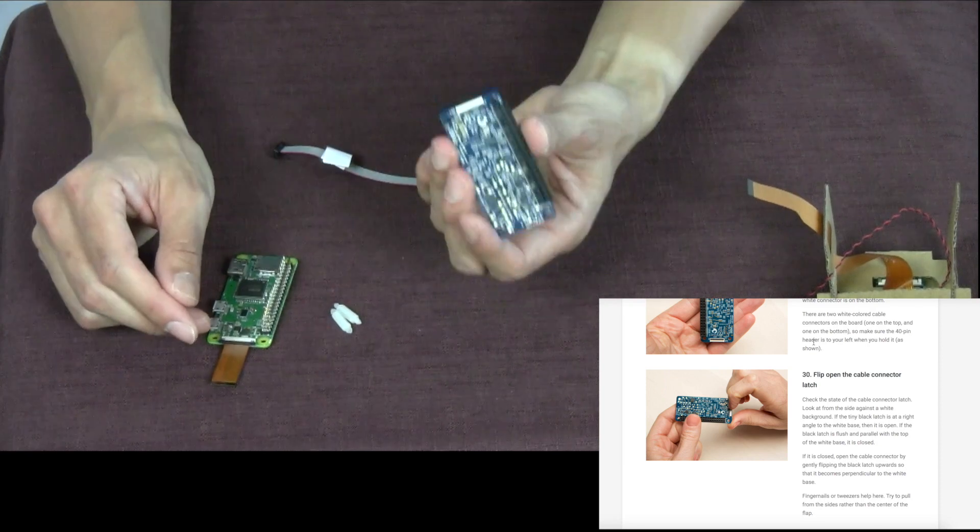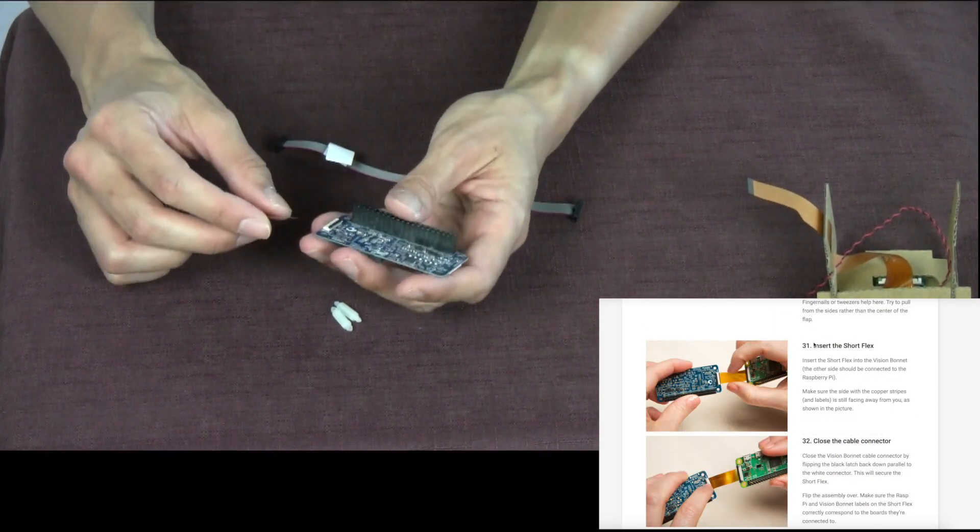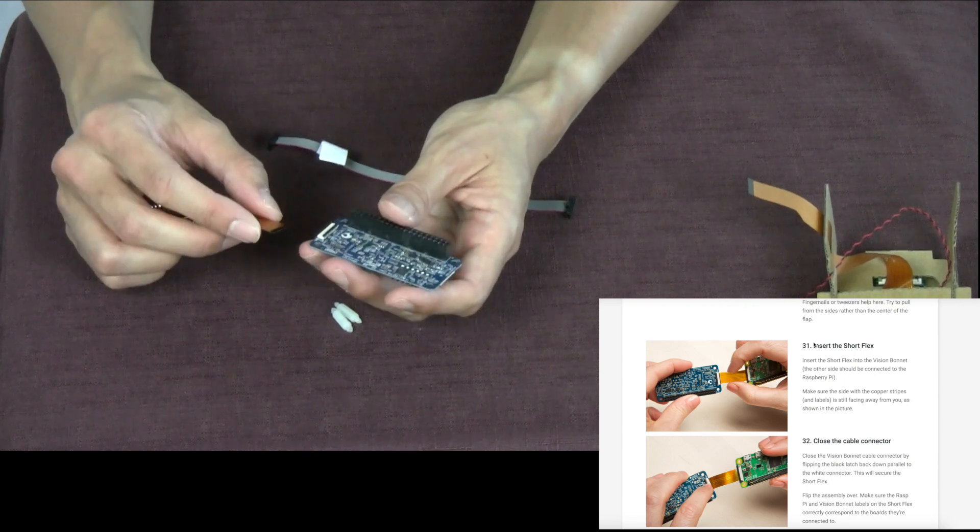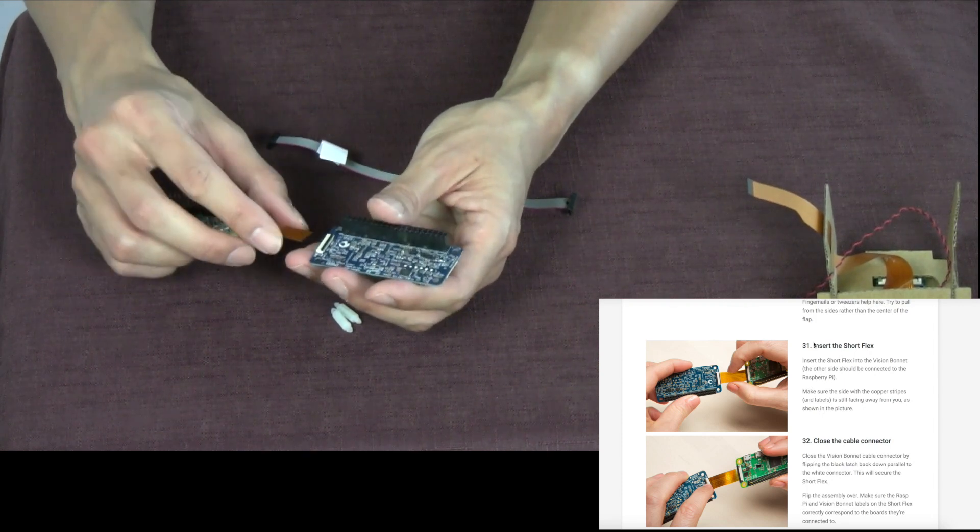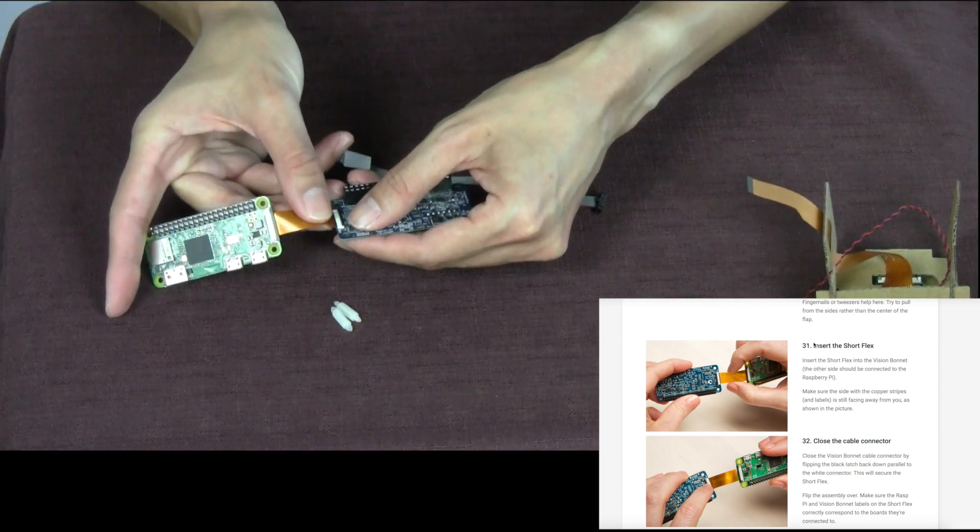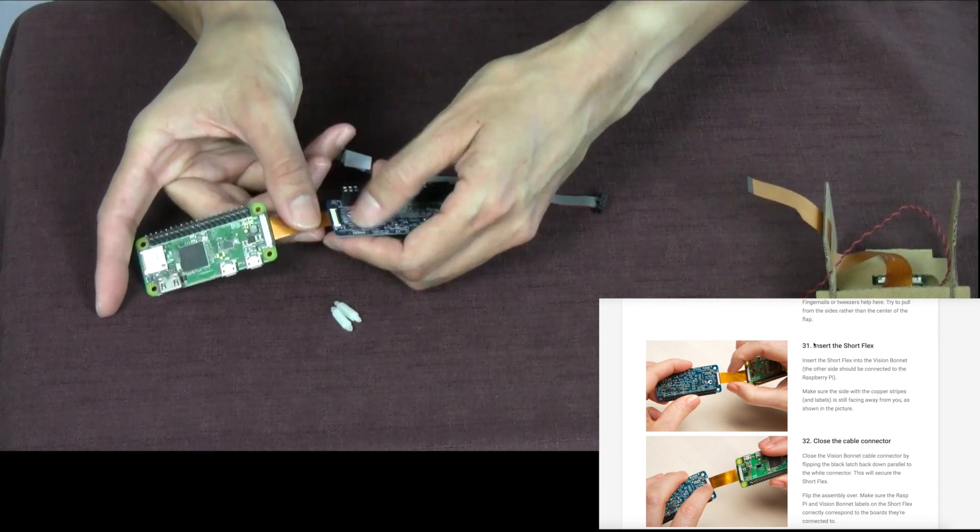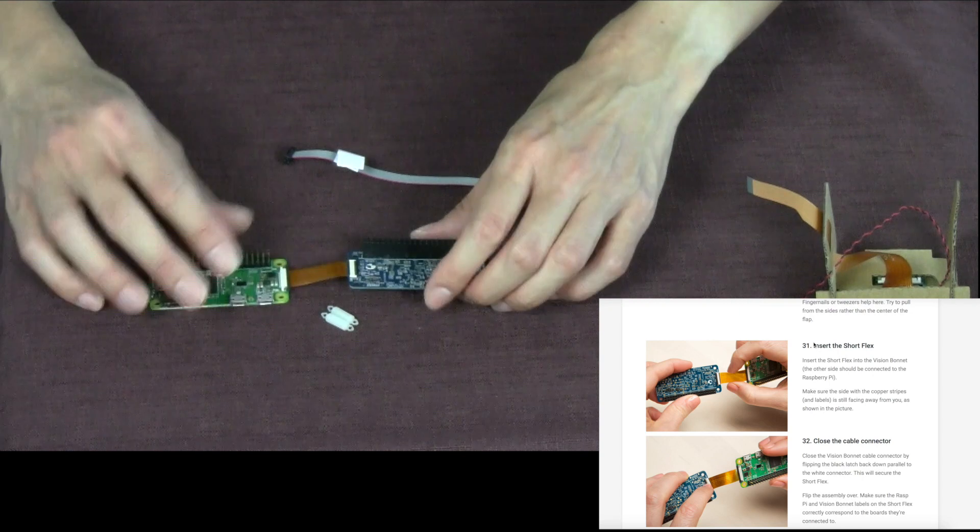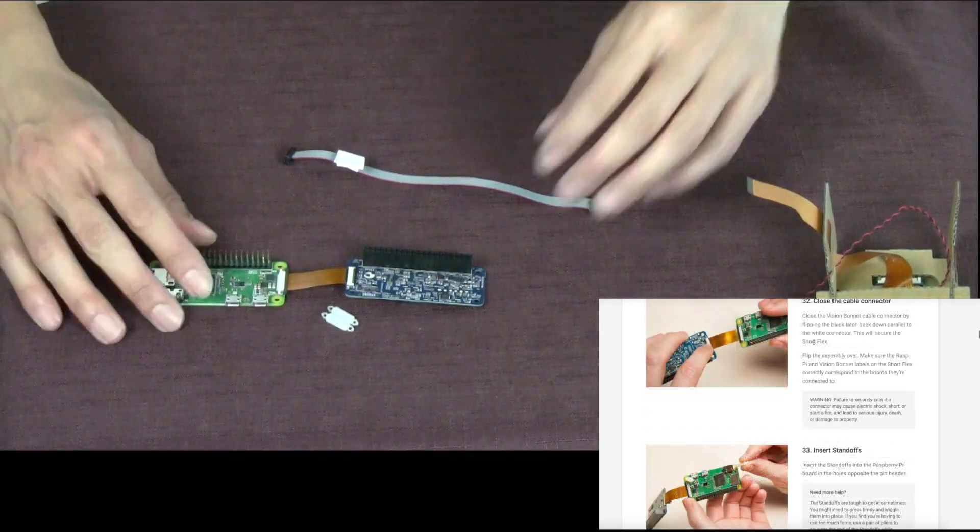So mine is very open. Insert the short flex. The side with the copper stripes and labels is facing away from me as shown in the picture. This is as far as I can go. And then I can flip down. And it is now attached. Look at that. Flip it over.